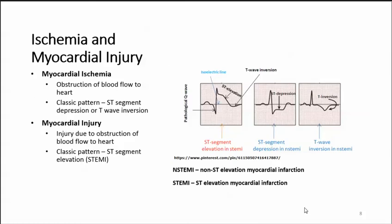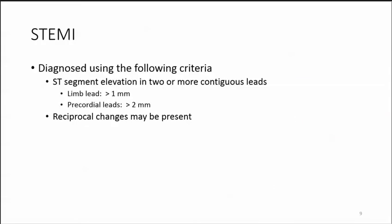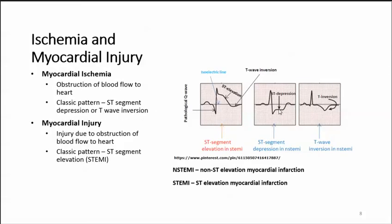Myocardial ischemia is the obstruction of blood flow to the heart. The classic pattern is ST segment depression or T wave inversion. This is your ST depression, and this is the inverted T wave. An NSTEMI is non-ST elevation myocardial infarction, so the ST is not elevated. Myocardial injury is injury due to obstruction of blood flow to the heart, and the classic pattern for that is ST segment elevation, or STEMI — ST elevation myocardial infarction. And there's your ST elevation.